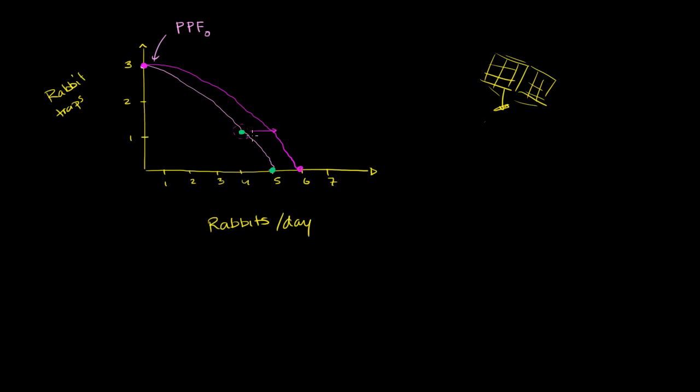So now he could either stop making rabbit traps and catch six a day, just with that one rabbit trap he has, or he could continue. And now, actually, he can catch five rabbits a day and still make one rabbit trap a day. And maybe he decides to do that. But it could be anywhere along this production possibilities frontier. So he could say, hey, you know, I'm happy eating the four rabbits a day. I'm going to make two rabbit traps now, every day.